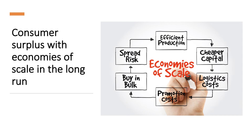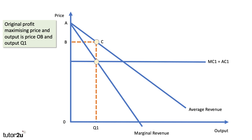Third example: let's look at the impact of economies of scale in the long run and what impact that has on consumer surplus. These questions often come up — assess or evaluate the impact of economies of scale on a market. Taking another constant cost example where MC1 equals AC1, the profit-maximising price is B at output Q1. At that output and price, consumer surplus is area ABC — the area underneath the demand curve and above the price.